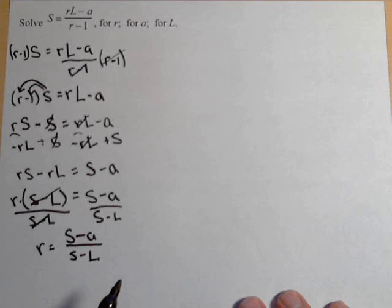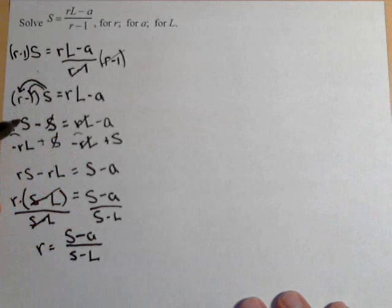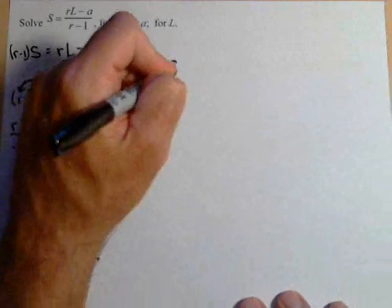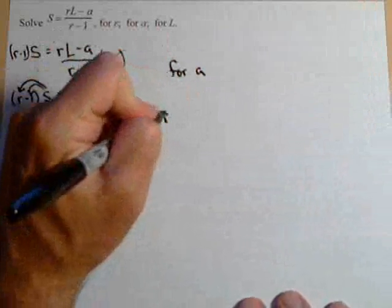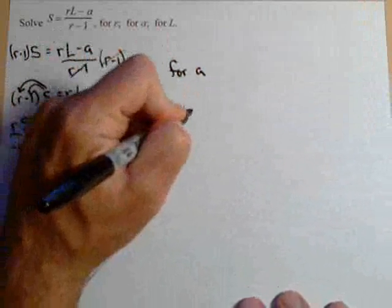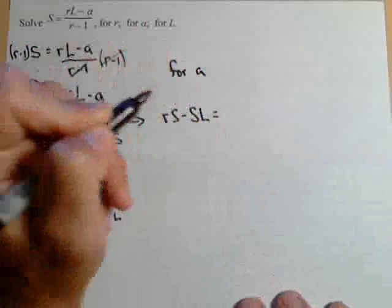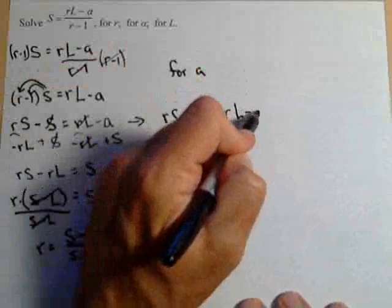Let's talk about solving for A. In solving for A, we would have the same first step. So we do the same first step as before, and we would probably go ahead and distribute that S. So let's just bring this across. Now we're solving for A, and we're at this point: RS minus S equals RL minus A.